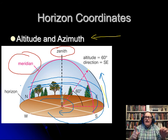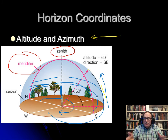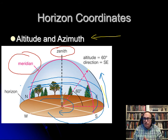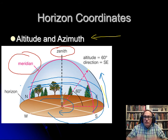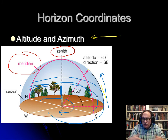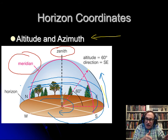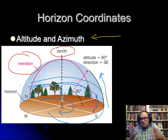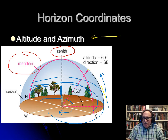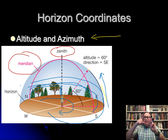The big advantage of horizon coordinates is you can tie them to your location. If you measure the altitude and azimuth, you can calculate your latitude and longitude. Conversely, if you know your latitude and longitude and the time, you can figure out the altitude and azimuth. Or if you know your latitude and longitude and measure the altitude and azimuth, you can figure out what time it is. It's algebra — three variables, know two, solve for the third.